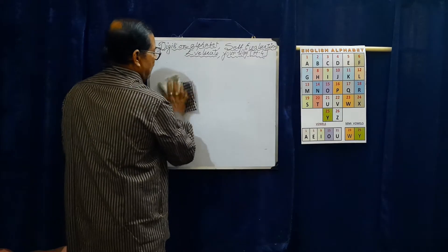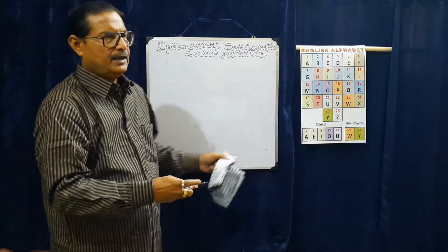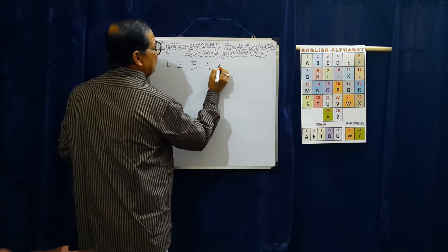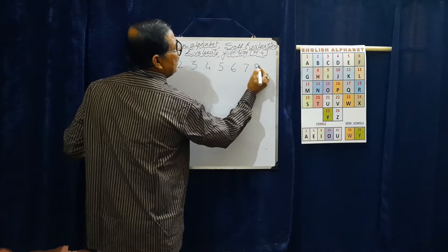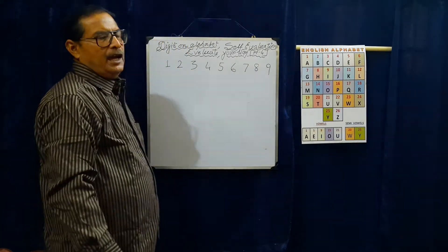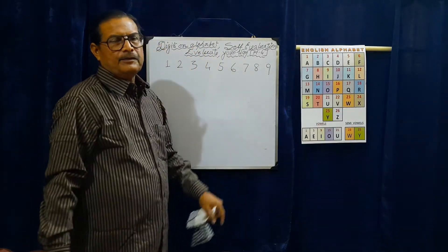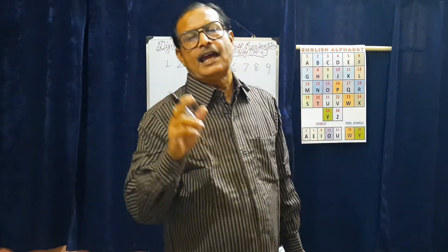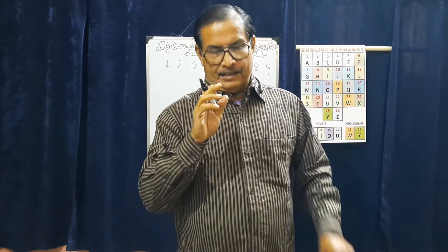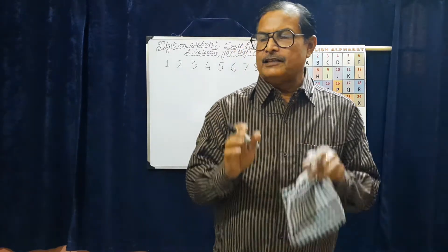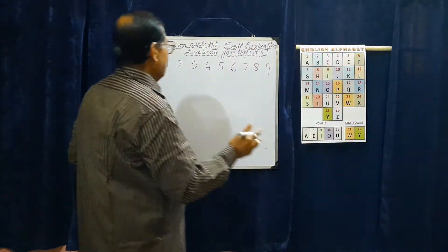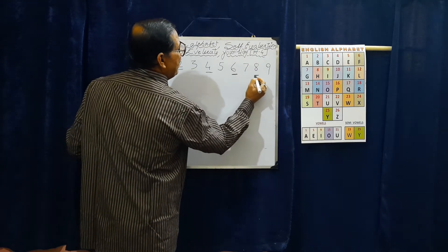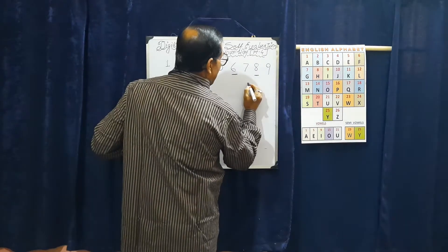Now we'll be playing with numbers. We know the natural numbers: 1, 2, 3, 4, 5, 6, 7, 8, and 9. If I tell you to find the even numbers — even numbers means if we divide that number by 2 and the remainder is zero, then it is an even number. So 2, 4, 6, and 8 are even numbers.